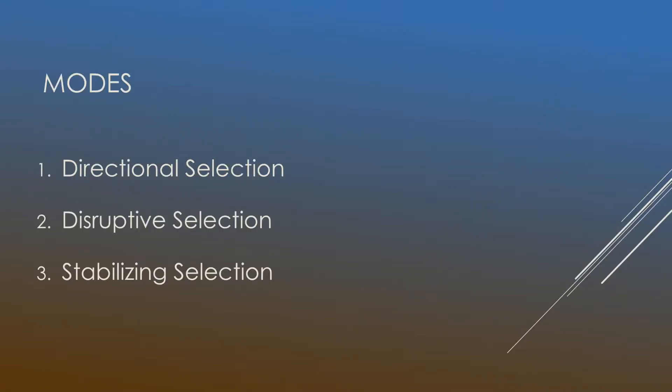So we have directional selection, disruptive selection, and stabilizing selection. We're going to go through each one and describe examples of each.